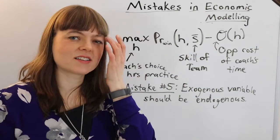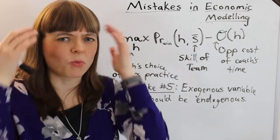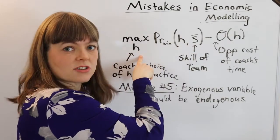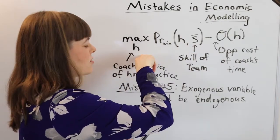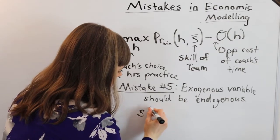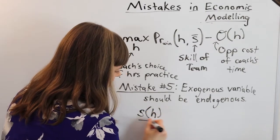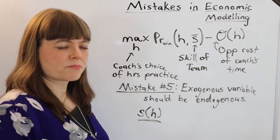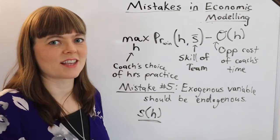However, there's this exogenous variable in the model that is skill of the team. And you might imagine someone looking at this model and saying, wait a second, doesn't the skill of the team depend on how many hours of practice there is? Like shouldn't skill of the team depend on age? Like that seems like it should be the case. And that could be a critique of the model. And there's a couple of different responses here.